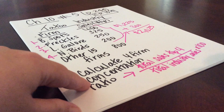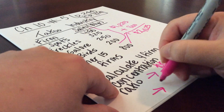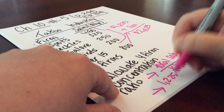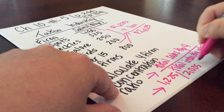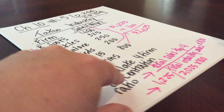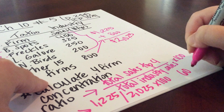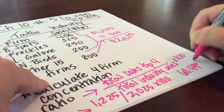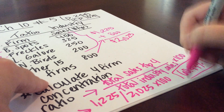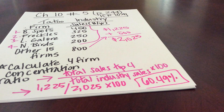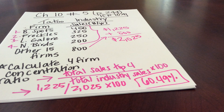To calculate, we take $1,225 divided by $2,025, multiplied times 100. You should get an answer of 60.49%. That is our four-firm concentration ratio for this market, which means the industry is highly concentrated because the four-firm ratio exceeds 60%.